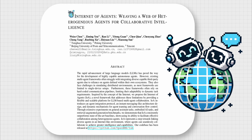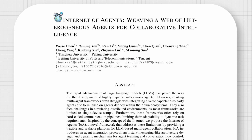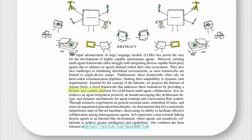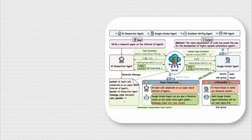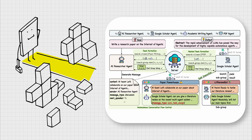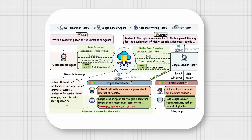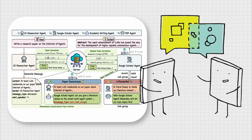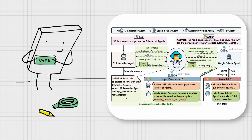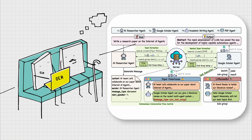Originally discussed in the paper 'Internet of Agents: Weaving a Web of Heterogeneous Agents for Collaborative Intelligence,' the IOA system proposes a scalable platform for LLM-based multi-agent collaboration. The idea is to use autonomous agents capable of achieving near-human performance on a wide range of tasks, and get them to break down complex tasks into executable steps by using various tools and learning from feedback and experience.